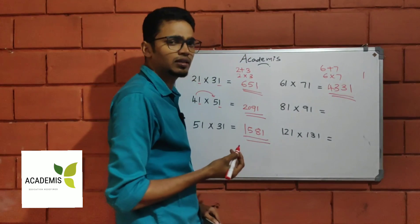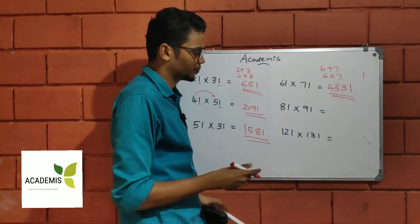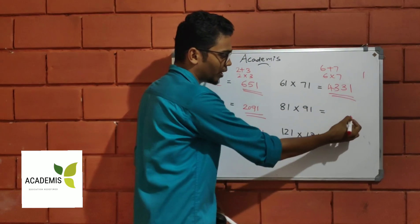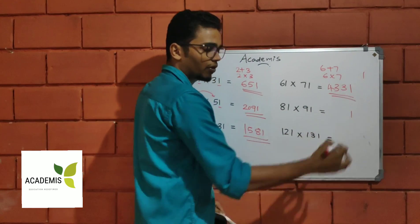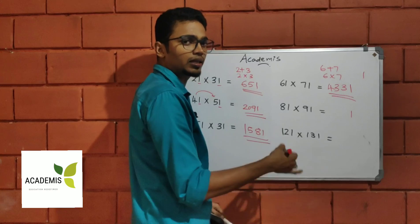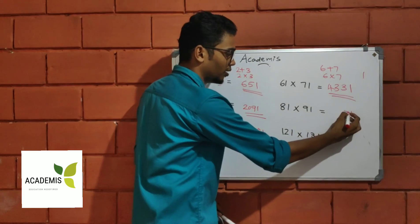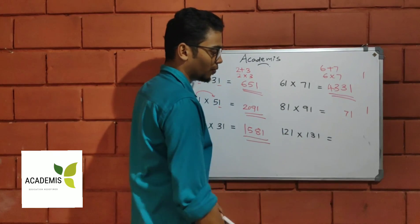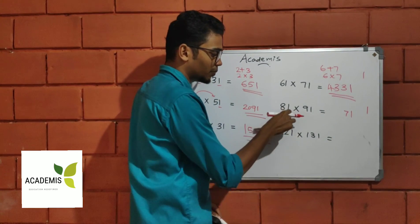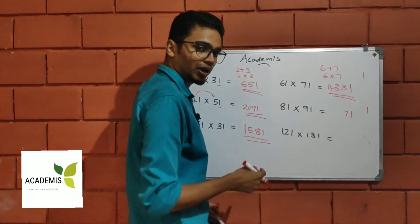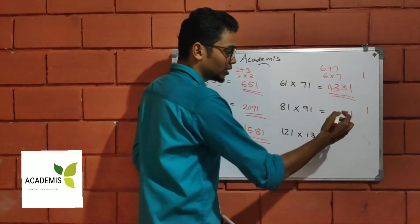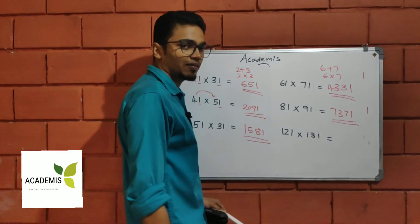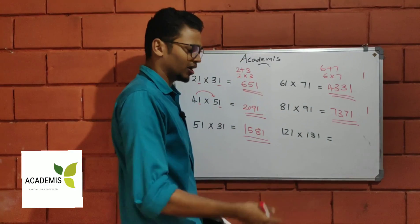But we shall not have the same variables. So 42 plus 1 is 43. I'm going to answer 4, 3, 1. They add 81 into 91. 1 into 1 is 1. This is 8 plus 9 is 17, carry 7. 8 into 9 is 72. 72 plus 1 is 73. I'm going to answer 7, 3, 7, 1.